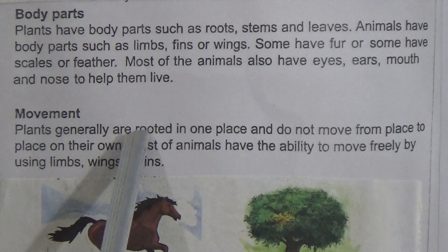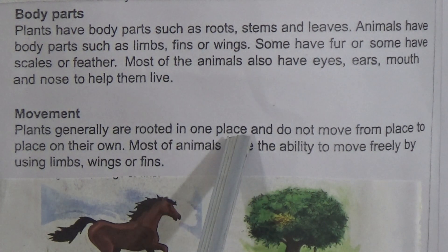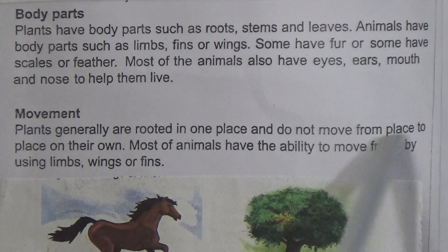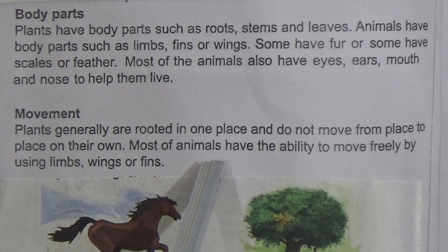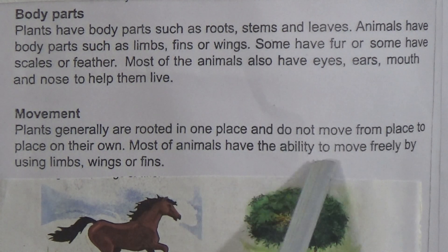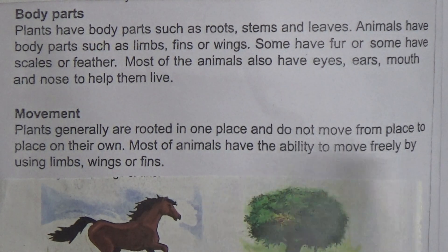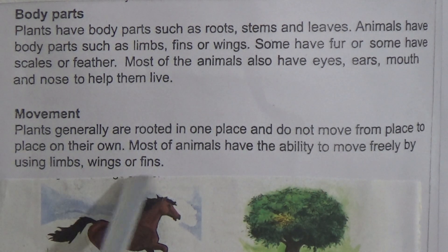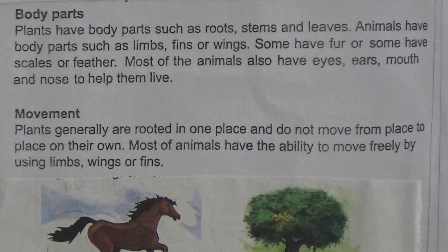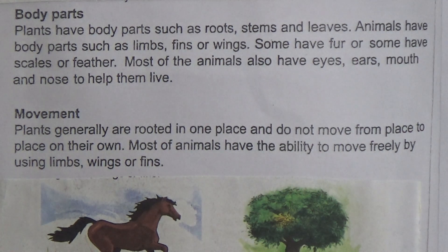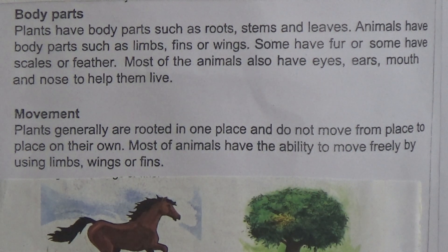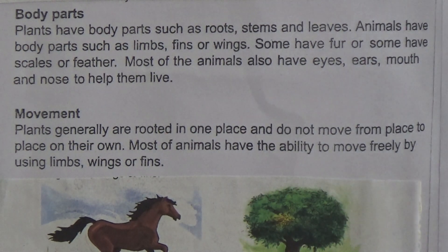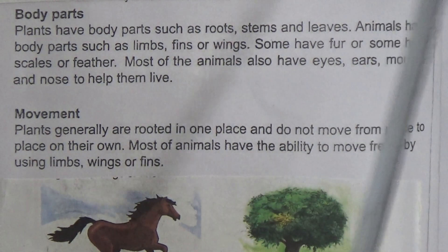Movement: plants are generally rooted in one place and do not move from place to place on their own. Most animals have the ability to move freely by using limbs, wings, or fins. You can see here — animals can move freely, while plants are rooted in soil and cannot move.